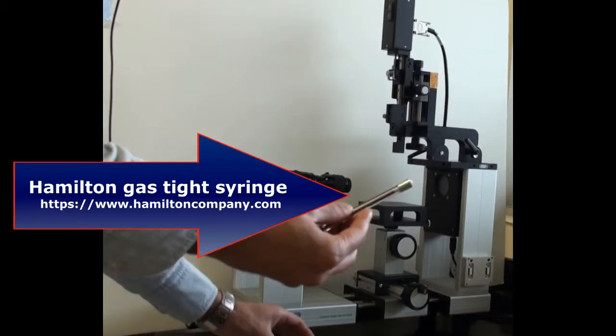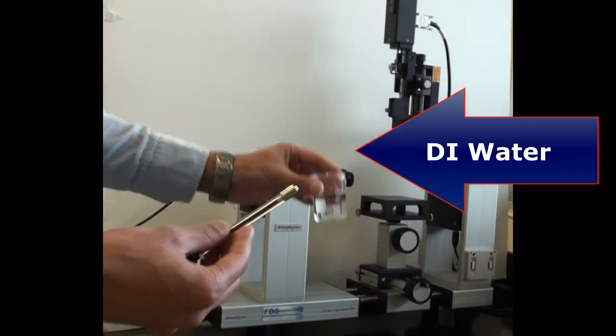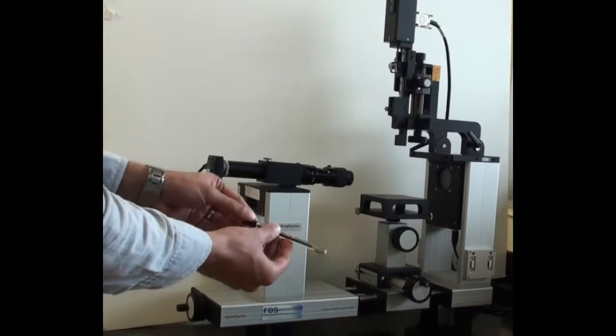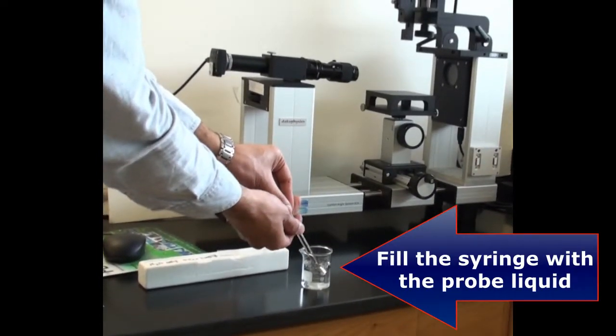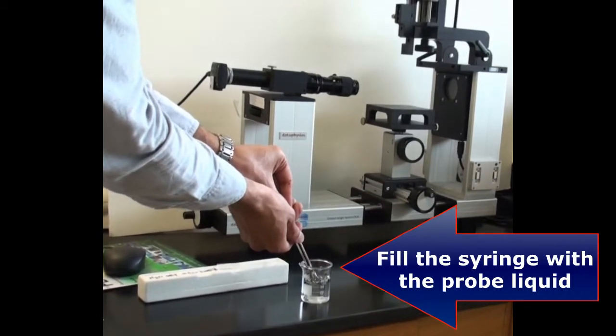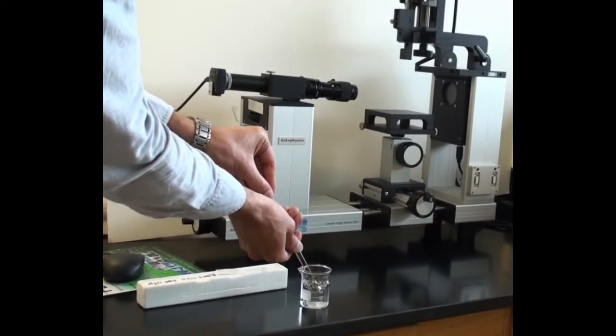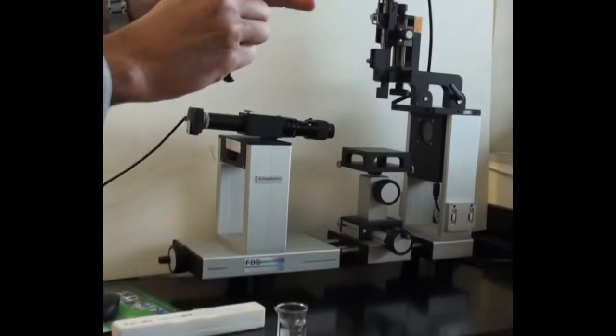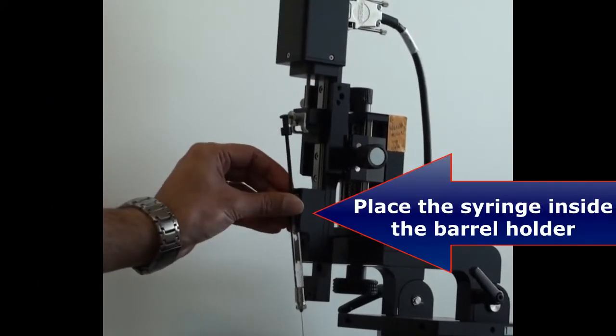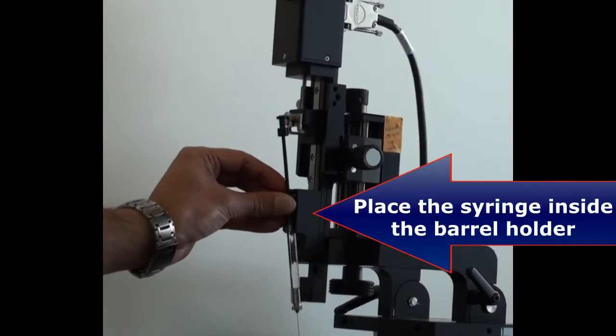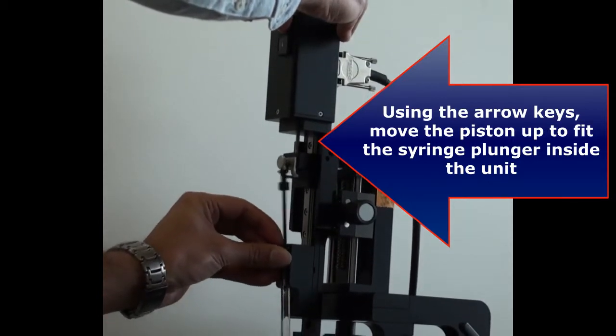Here we are using deionized water as the probe liquid. Put the head of the needle inside your liquid and fill it up. In this example, that's water. Put the needle back on the syringe slightly to be able to insert the syringe inside the unit.